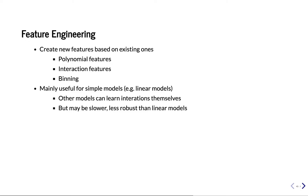They're mainly useful whenever you want to use simple models such as linear models, and these methods all change your original data by doing some operations or transformations on them. First there's polynomial features. You can also add interactions between the features, and you can split up the features into multiple bins and create multiple features out of them. All these methods basically create more features based on the existing ones.